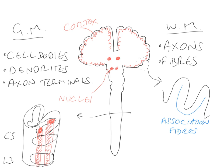The second type of white matter connection are the commissural fibres. What commissures do is connect the two hemispheres together - they connect the left and right sides of the central nervous system together. The classic example of a commissure is the corpus callosum, which connects the left and right hemispheres of the brain. We also have commissures in the spinal cord which allow fibres to cross from one side to the other - these cross in the so-called ventral white commissure of the spinal cord.